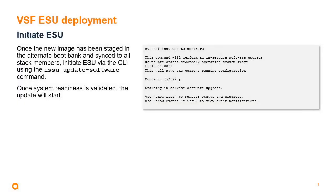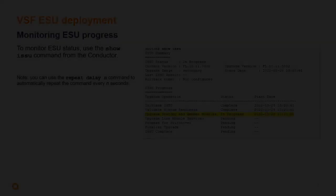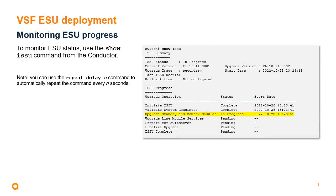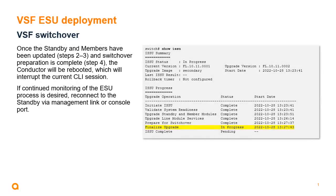Once the new software image has been staged in the alternate boot bank and synchronized to all stack members, initiate ESU using the CLI command ISSU update software. Once system readiness validation checks are complete, the update will start. The show ISSU command can be used from the conductor to monitor the status of the upgrade. You can use repeat delay n to automatically repeat the show ISSU command every n seconds. Note that once standby members have been updated and switchover prep is complete, the conductor will reboot, interrupting the current CLI session. Reconnect via the standby's console or management link to continue monitoring.